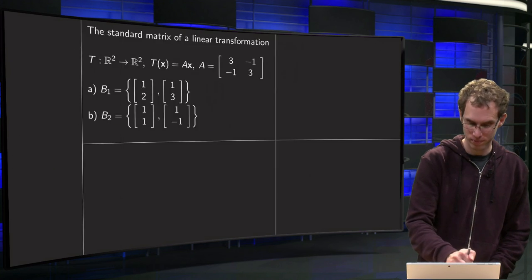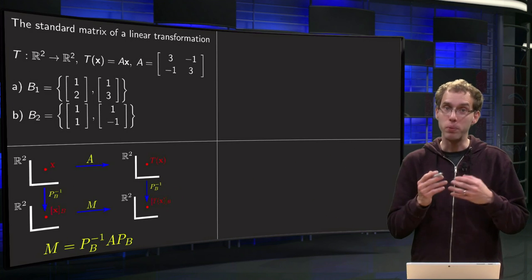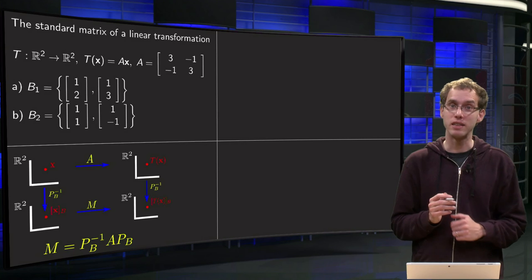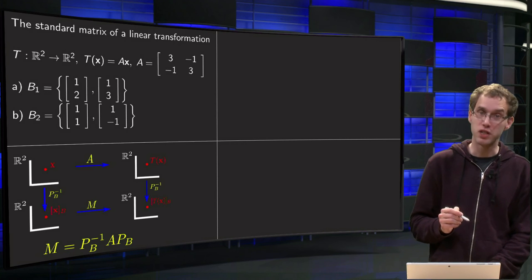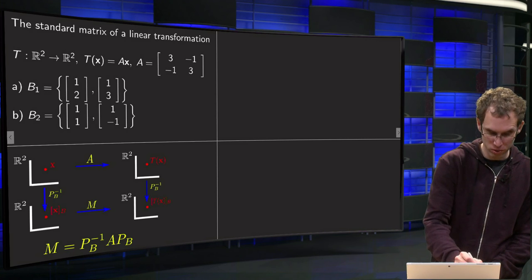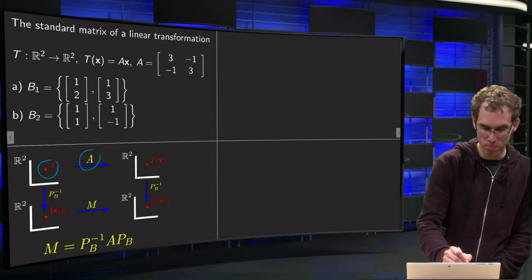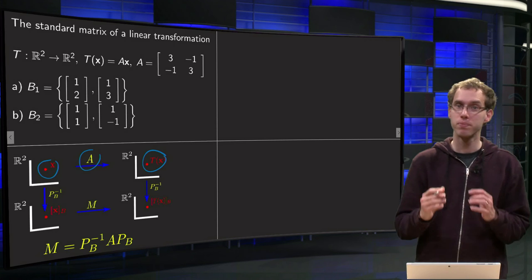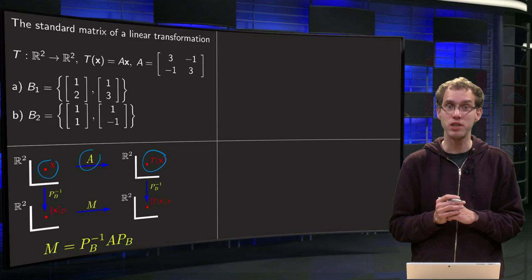How do we do that? Well, we know this figure we had previously. So we have our R² and x, the matrix A, T(x) over there. That's T(x) equals A times x.